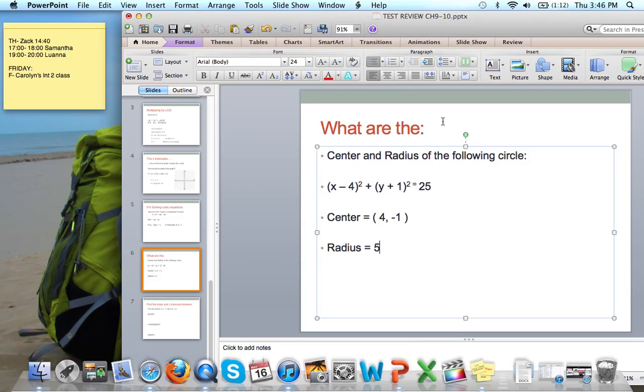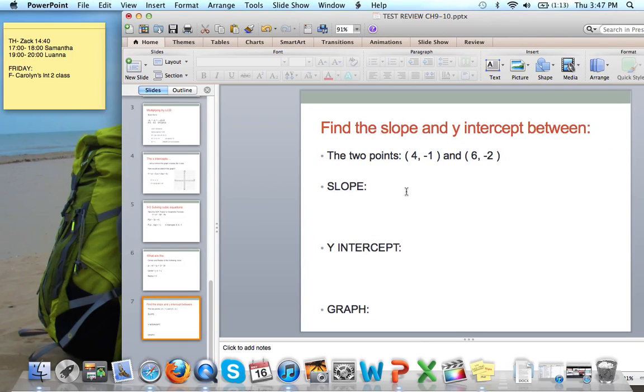Then if we were graphing this, we could move on the x-axis over 4, the y-axis down 1. And we know at a radius of 5 in all directions, we could draw our circle and graph on an x-y-axis. This is, of course, not three-dimensional. So hopefully that shouldn't be an issue. Moving ahead here.